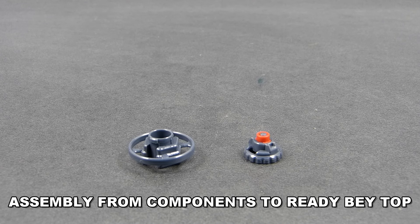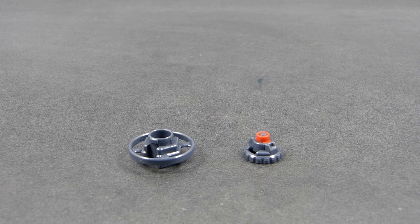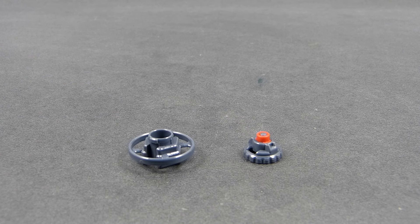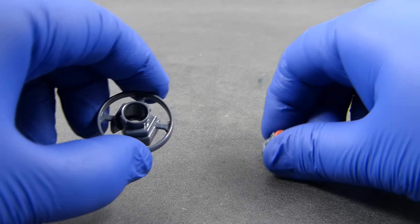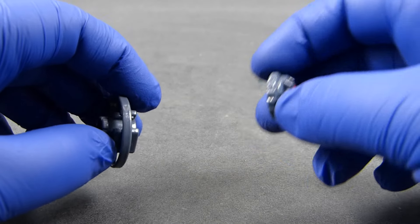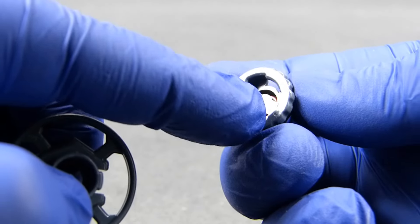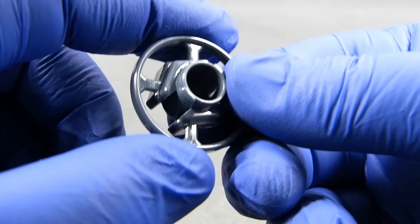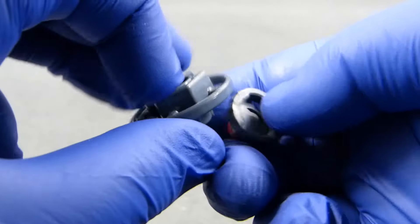First we deal with the performance tip known as CS or coating spike, and spin track D125 or defense 125. These can combine separately from the rest of the Bey. Over here we have some grooves with two cutouts that will connect using these two small protrusions on the spin track.